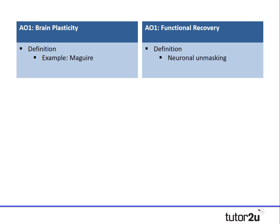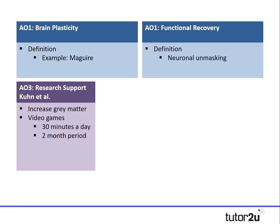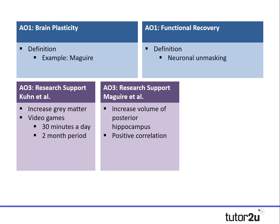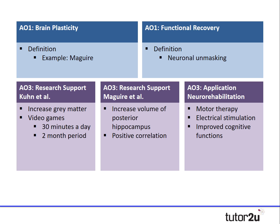Now let's consider the evaluation. As always, I recommend planning to write approximately three points, and it's the quality and depth of the points that's the most important element. For this particular essay, I might draw on research by Kuhn, who looked at the effects of video games on the brain; research by Maguire, who looked at the taxi drivers; and a positive application of functional recovery to the field of neurorehabilitation. Finally, I might extend my Maguire evaluation point by incorporating an issue and debate.